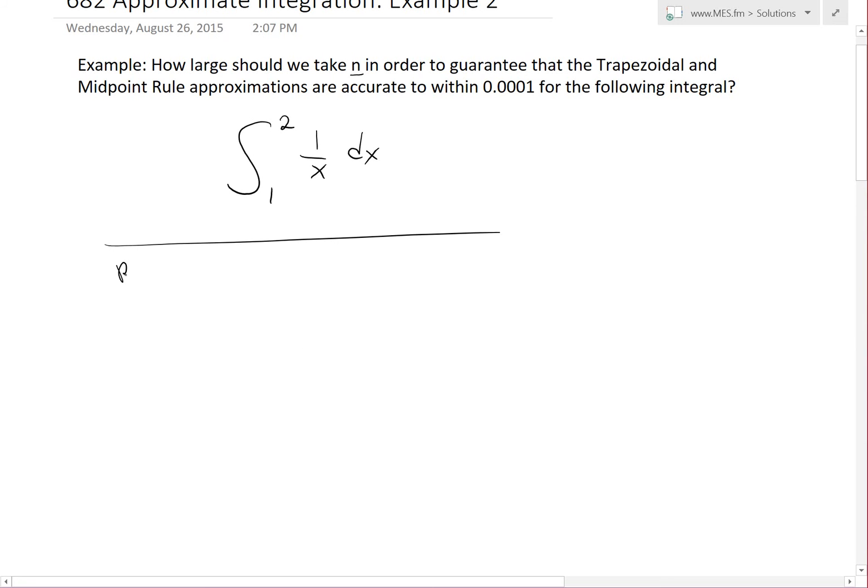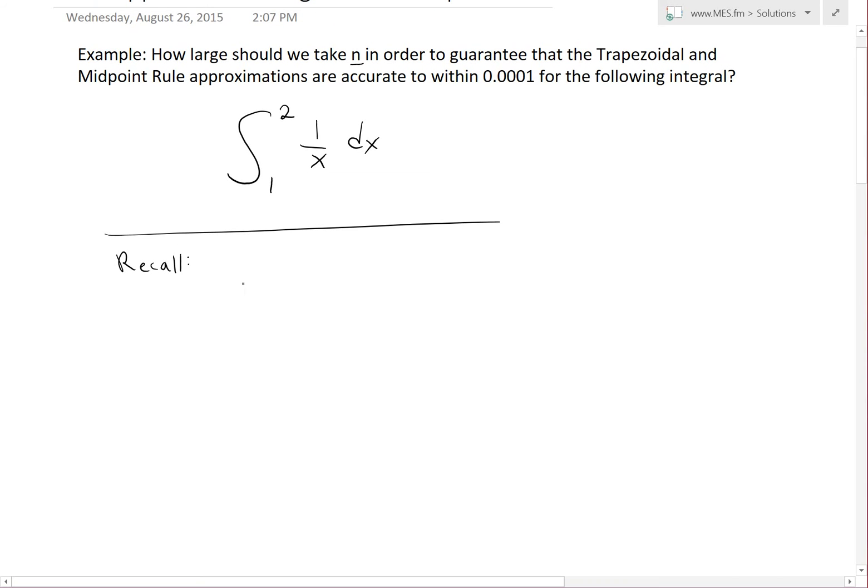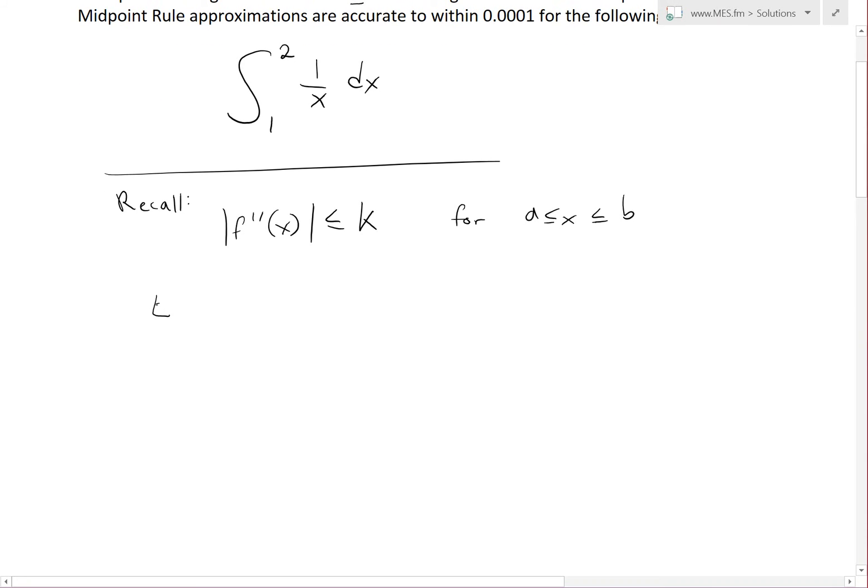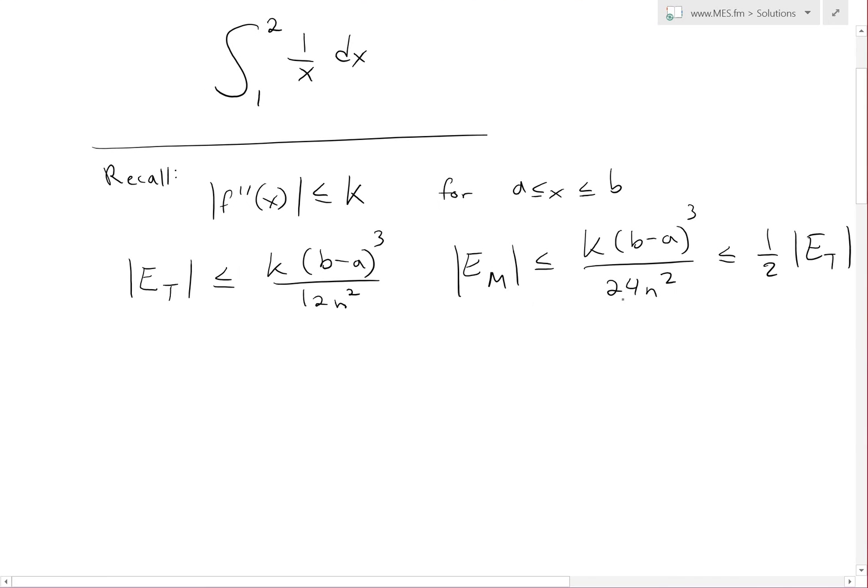To recap the error bound methods for both the trapezoidal and midpoint rules: if |f''(x)| ≤ k for a ≤ x ≤ b, then for the trapezoidal error |E_T| ≤ k(b-a)³/(12n²). For the midpoint rule |E_M| ≤ k(b-a)³/(24n²). The midpoint error is less than or equal to one half of the trapezoidal error - 24 versus 12 is the only difference.